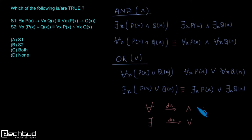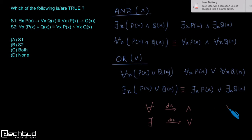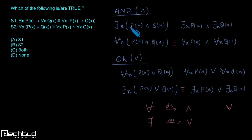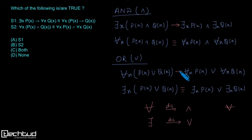As a memory trick: ∀ looks somewhat like 'or' but is NOT distributive over 'or' — that's the trick to remember. Also note that when we break ∃ over 'and', we get an implication sign. Similarly, when we break ∀ over 'or', we get a reverse implication.